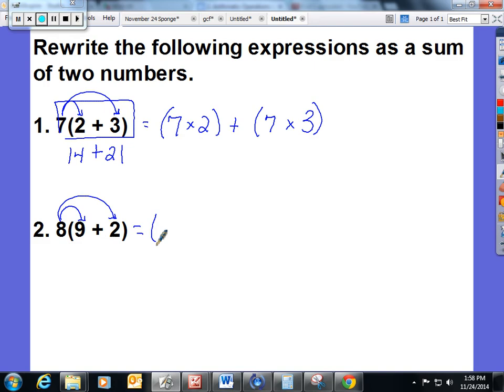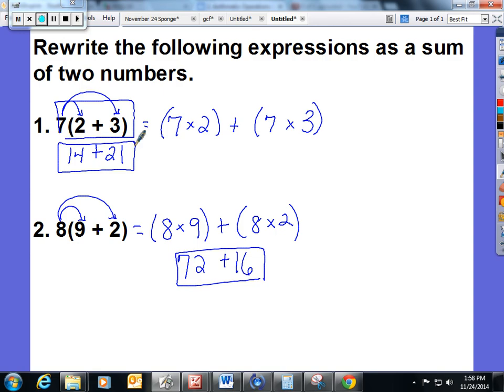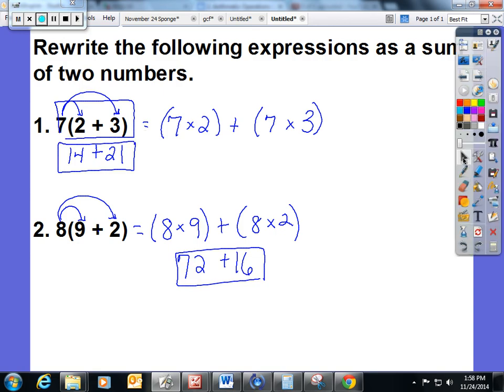This really is 8 times 9 plus 8 times 2. That would give you 72 plus 16 written as a sum. And that's a brief outline of what we did today in Lesson 13.